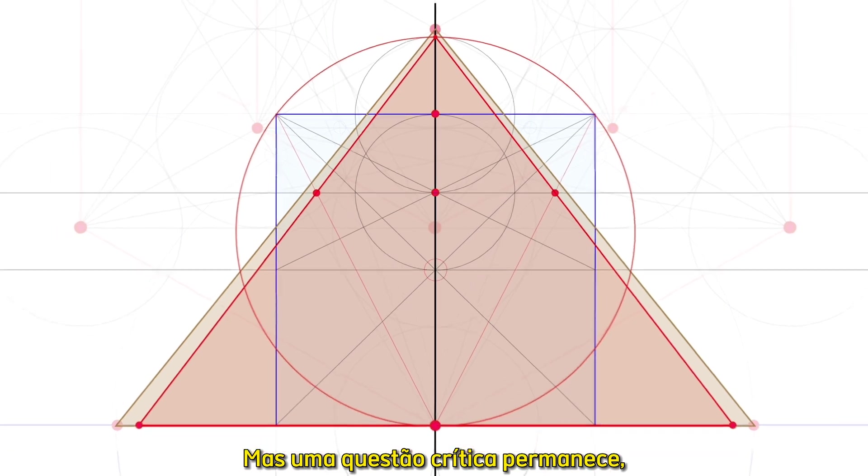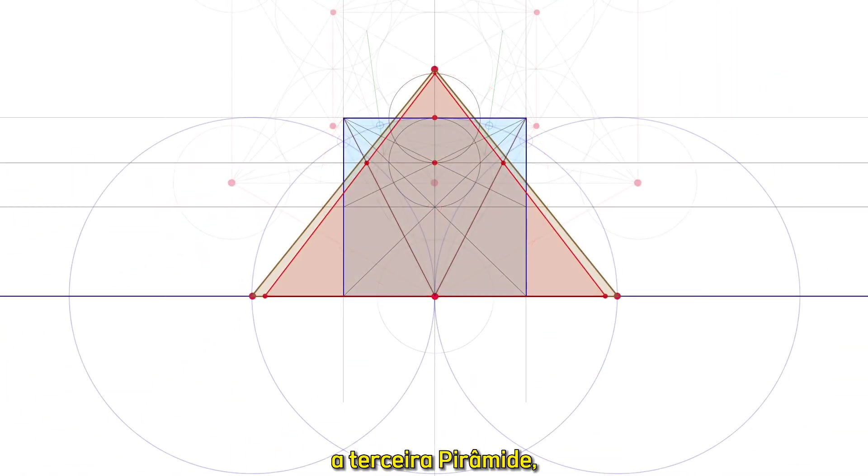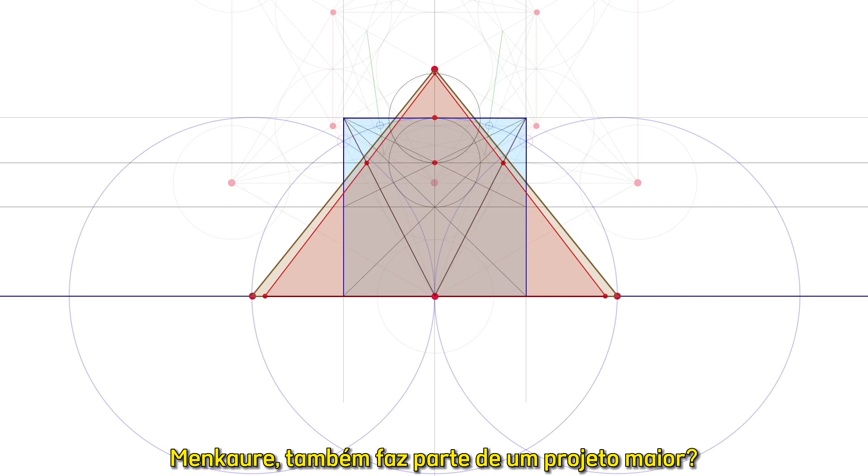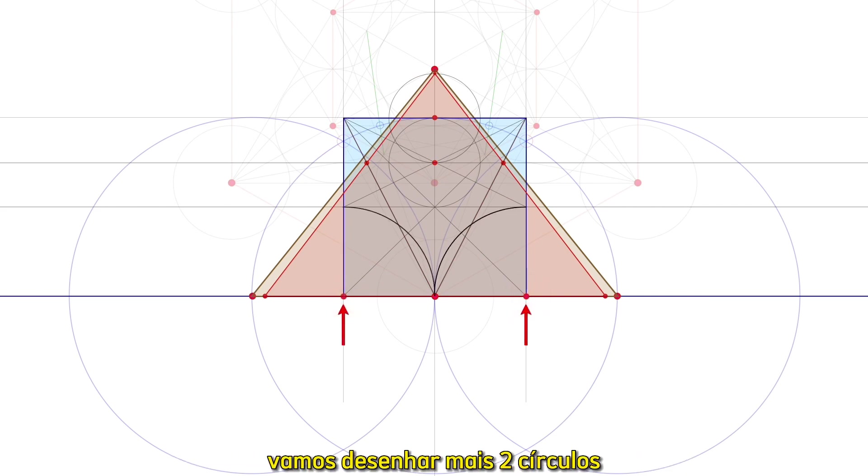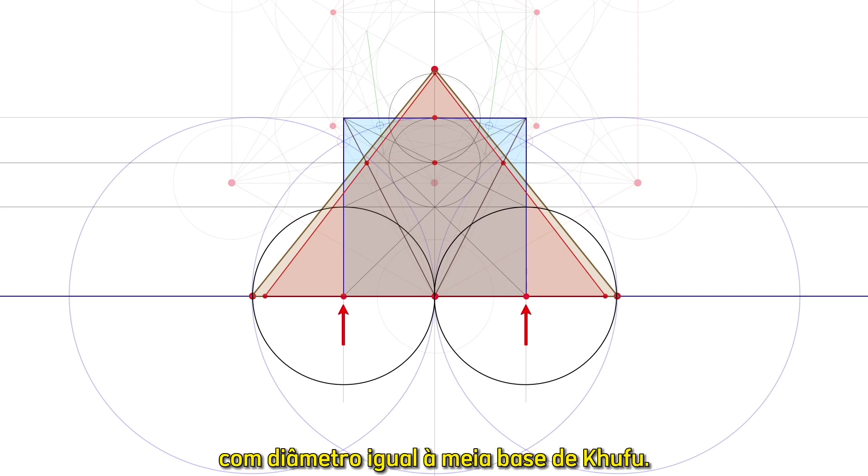But one critical question remains. Was the third pyramid, Menkaure, also part of some grand design? To find out, let's draw two more circles with diameter equal to Khufu's half-base.